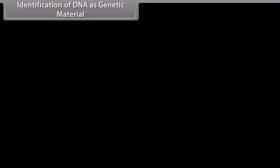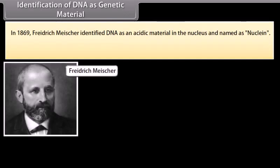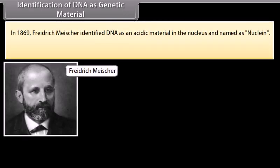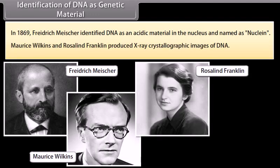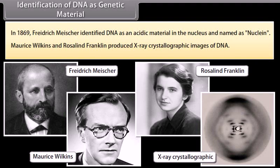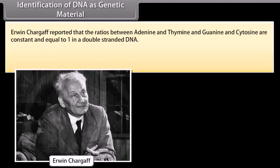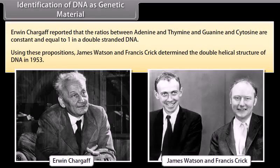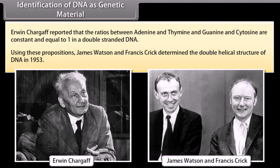Identification of DNA as genetic material. In 1869, Friedrich Miescher identified DNA as an acidic material in the nucleus and named it nuclein. Morris Wilkins and Rosalind Franklin produced X-ray crystallographic images of DNA. Erwin Chargaff reported that the ratio between adenine and thymine, and guanine and cytosine, are constant and equal to 1 in a double-stranded DNA. Using these propositions, James Watson and Francis Crick determined the double helical structure of DNA in 1953.